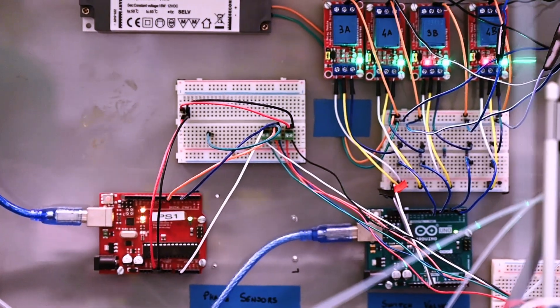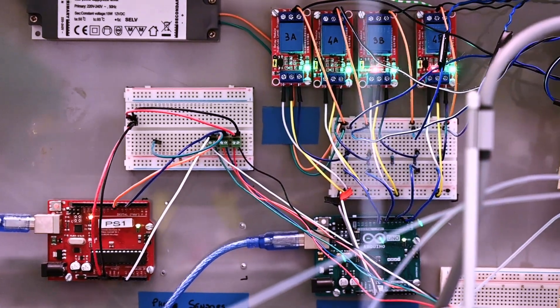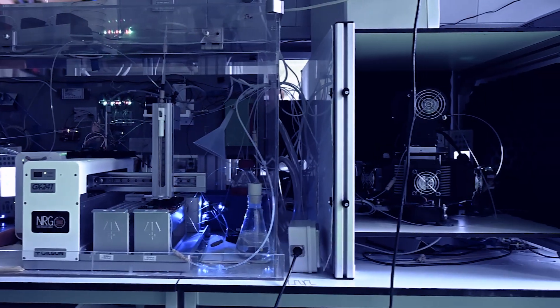RoboChem provides several benefits to classical chemical making. It's much faster, it works 24-7, it has higher precision, and it's also intelligent, finding you the best possible reaction conditions with a minimal amount of waste.